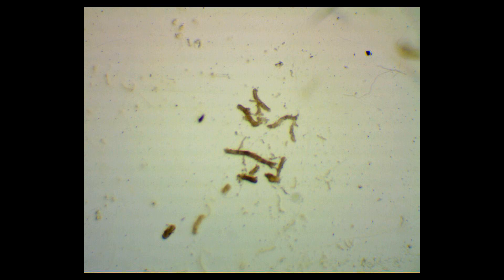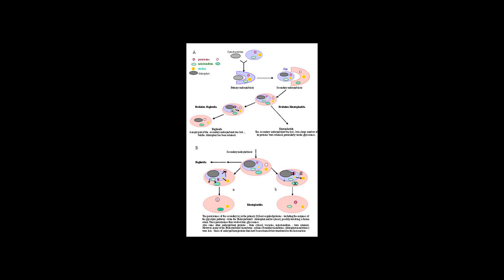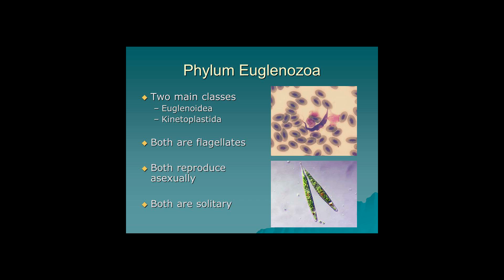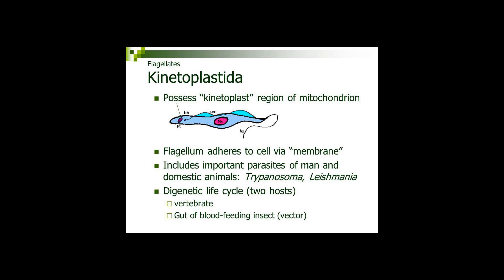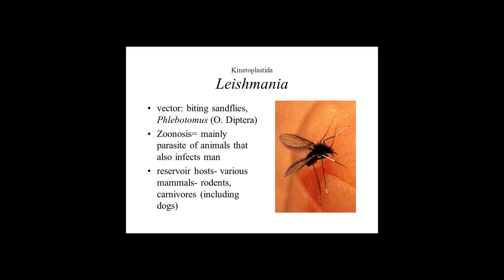Morphology. Kinetoplastids are eukaryotic and possess normal eukaryotic organelles, for example the nucleus, mitochondrion, Golgi apparatus, and flagellum. Along with these universal structures, kinetoplastids have several distinguishing morphological features such as the kinetoplast, subpellicular microtubule array, and the paraflagellar rod.